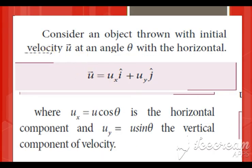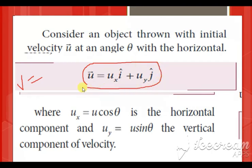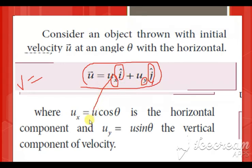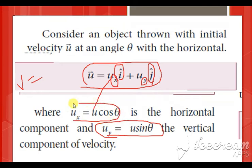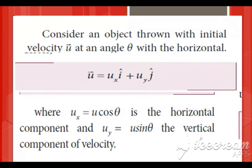The object moves with horizontal velocity u at angle θ. The velocity vector is u = uₓ·i + uy·j. Here uₓ = u·cosθ and uy = u·sinθ. These are the two key component values for angular projection.